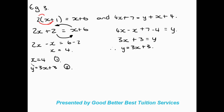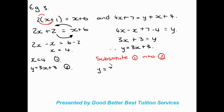We already have an equation giving X and an equation with Y as the subject, so we don't need to make another equation. We can substitute equation number 1 directly into equation number 2. So Y equals 3 times 4 (substituting X equals 4) plus 3, giving Y equals 12 plus 3, therefore Y equals 15.